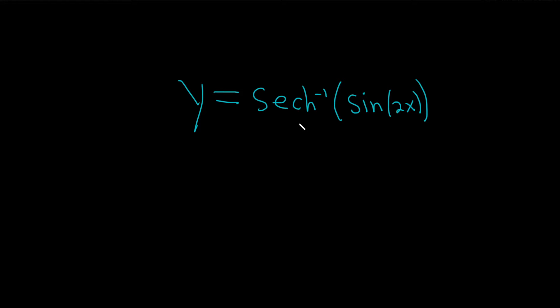Hello, in this problem we have to find the derivative of this function. This is the inverse of the hyperbolic secant of the sine of 2x.